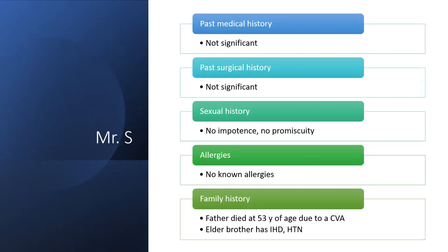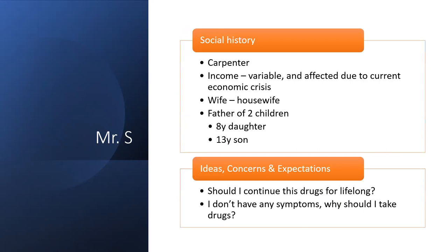He was a smoker of one to two cigarettes per day and was willing to stop. Alcohol use was once or twice a week — a quarter to half a bottle of arrack with friends. CAGE screening was zero and he had not considered stopping. No family disharmony or social problems associated with alcohol. Family history was significant: father died at 53 from CVA, and his elder brother had hypertension and ischemic heart disease.